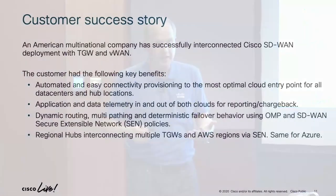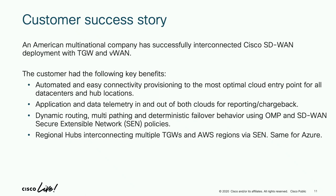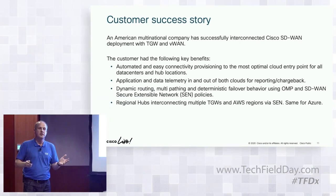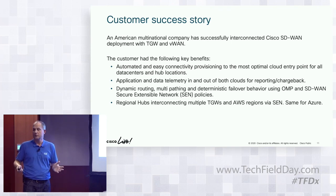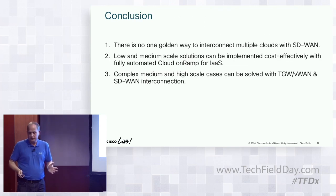A quick customer success story. It's an American multinational company that implemented SD-WAN and interconnected TGW and VWAN — for now manually, because we're still tweaking and coding the automation. The main benefit, as mentioned, was unified configuration and unified policy enforcement across the whole thing. They don't differentiate public cloud, WAN, or anything else — it's just one big network.